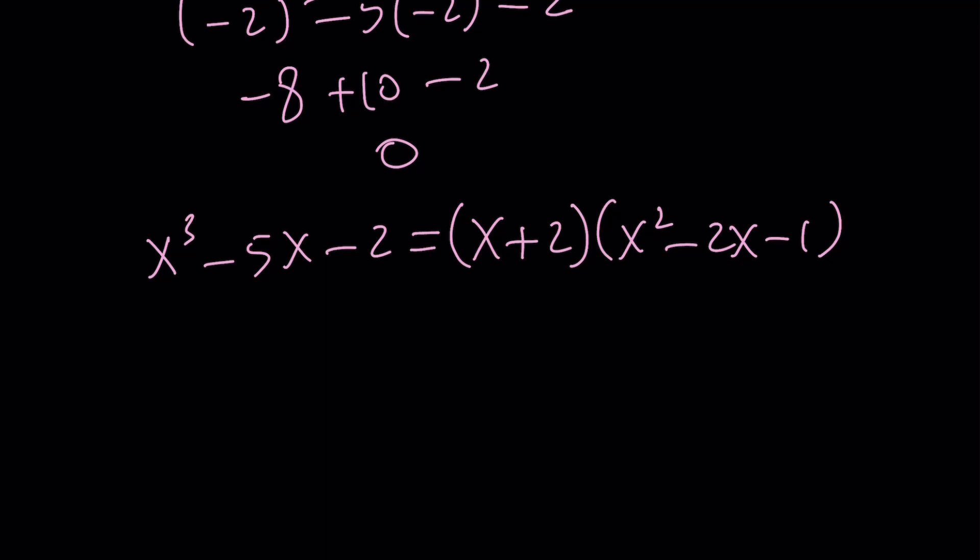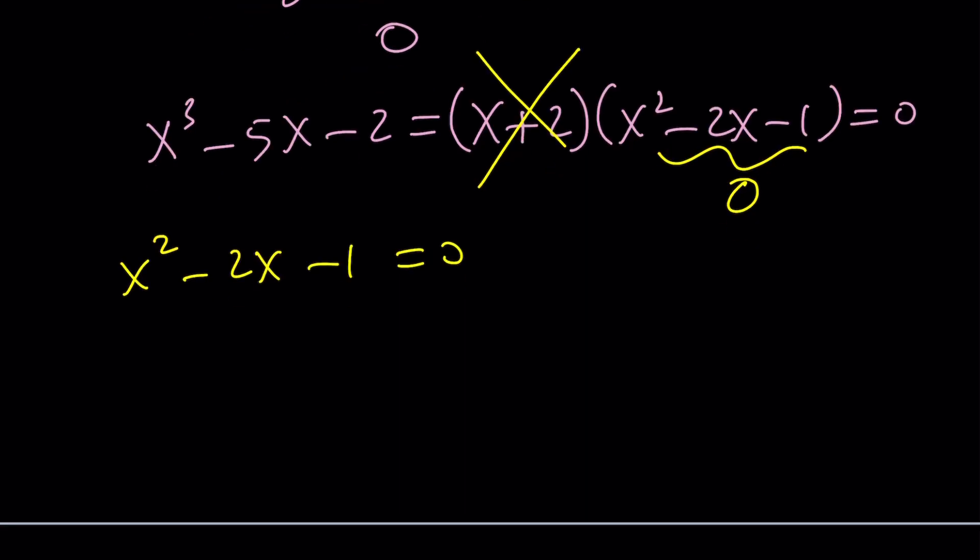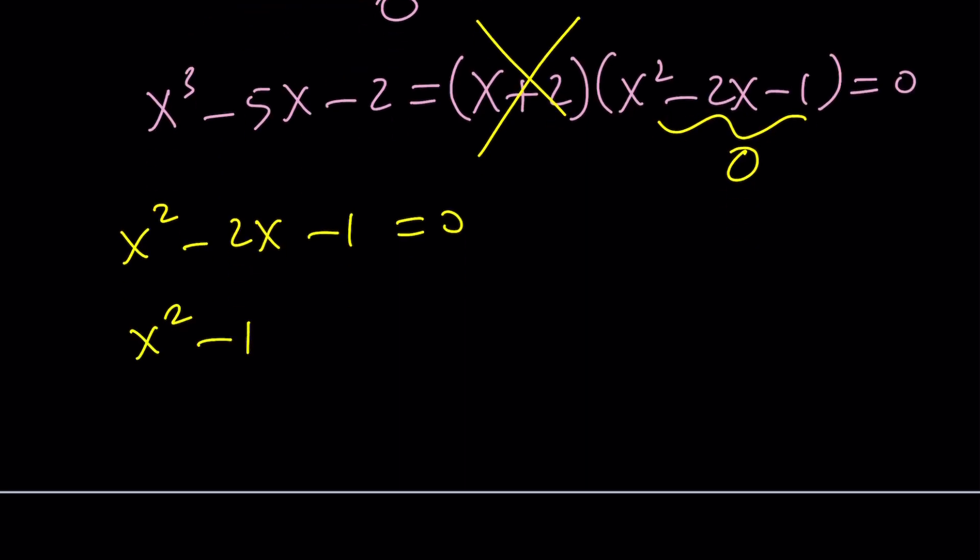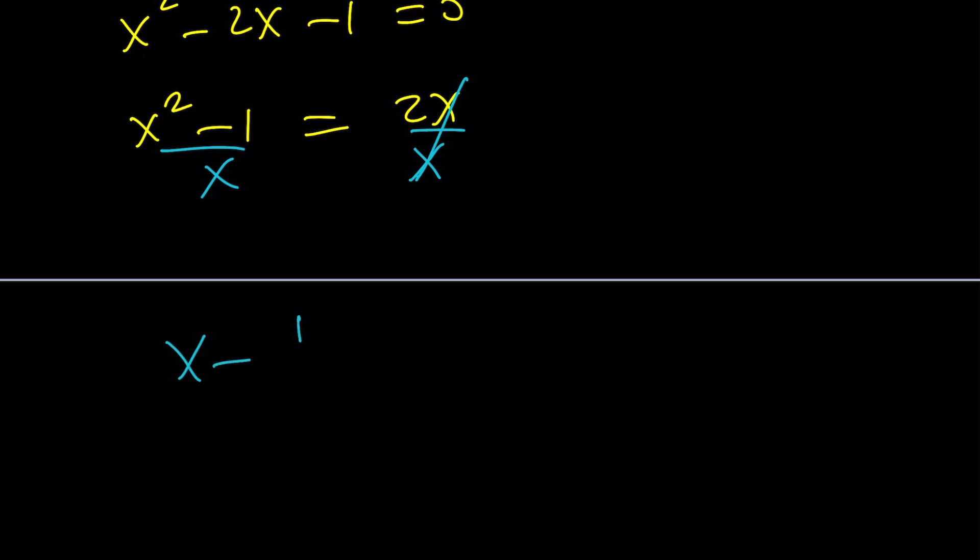Factor theorem says x plus 2 is a factor, and the other factor is going to be x squared minus 2x minus 1. We do not want x to be negative 2, so x plus 2 can't be 0, so x squared minus 2x minus 1 has to equal 0. From here, we're going to isolate the 2x and divide everything by x, and that's going to give us the answer. x minus 1 over x equals 2 if x does not equal negative 2.